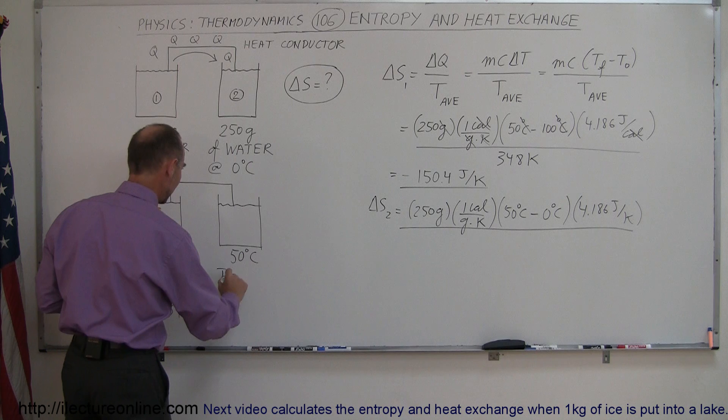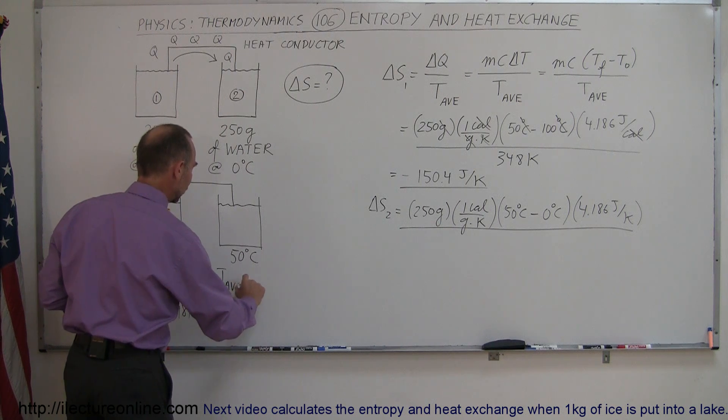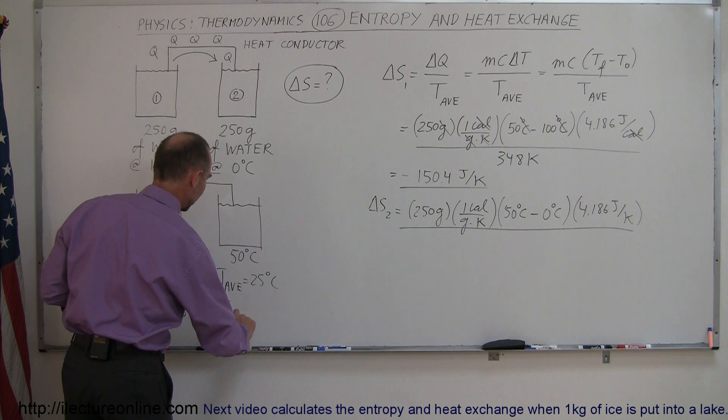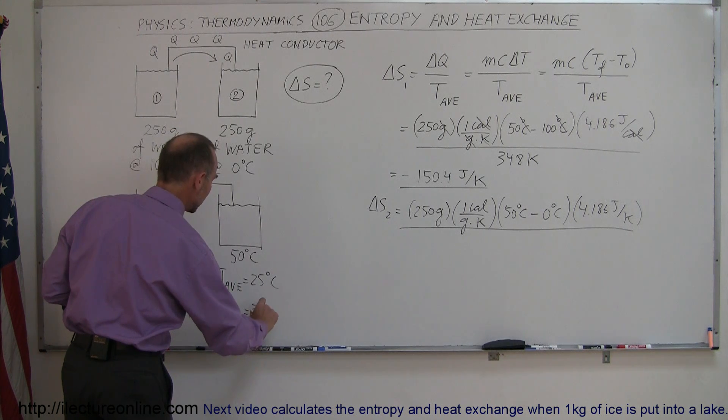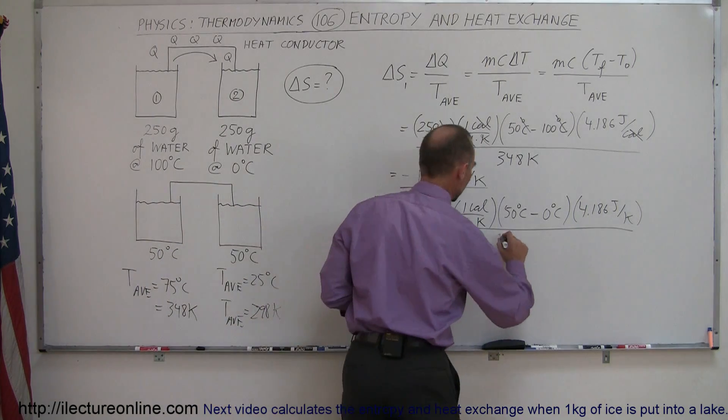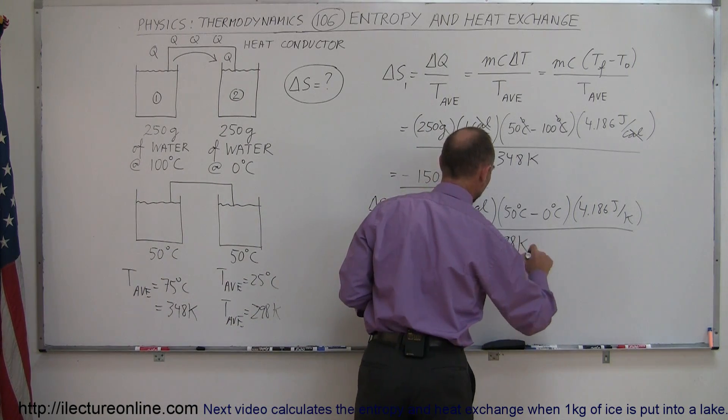And then the whole thing divided by the average temperature for the cold cup. Now that would be from 0 to 50, so T average in this case is 25 degrees centigrade, that means T average in that case is 298 Kelvin. Alright, so that goes down here, 298 Kelvin.